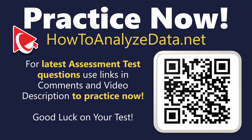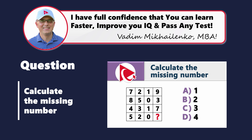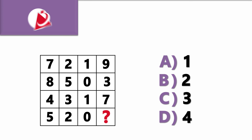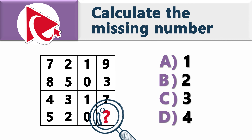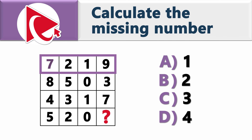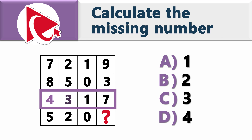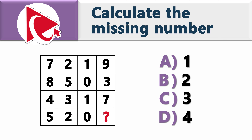It's puzzle time, and this one is more perplexing than teaching a goldfish how to play chess. You're presented with a 4×4 matrix where one value is missing. Starting with row 1: 7, 2, 1, and 9. Row 2: 8, 5, 0, and 3. Row 3: 4, 3, 1, and 7. Row 4: 5, 2, 0, and the missing number — to be selected from: Choice A: 1, Choice B: 2, Choice C: 3, Choice D: 4.